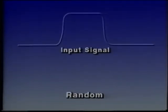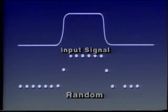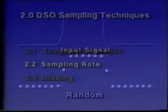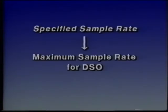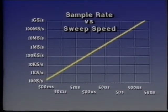Random equivalent-time sampling acquires sample points in a random sequence relative to the trigger point. In a simplified view, only one sample point is taken per input cycle, but many DSOs actually take more than one point per input cycle to speed up acquisition time. A DSO's stated sample rate refers to the scope's maximum sample rate; the actual sample rate changes based on the sweep speed setting.